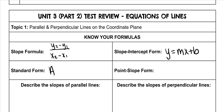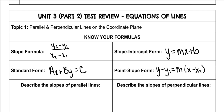Standard form is ax plus by is equal to c. You don't actually have to put anything in standard form — you usually have to move it from standard form to slope-intercept form and so forth. Point-slope form is y minus y1 is equal to m times x minus x1. We use point-slope form anytime you're given a point and a slope, or two points — you find the slope from those two points and then plug it in.